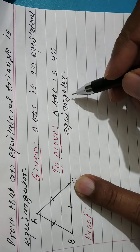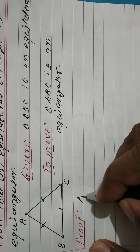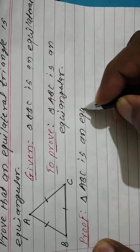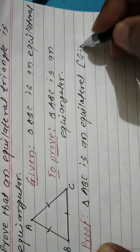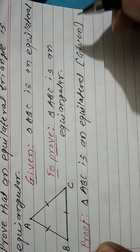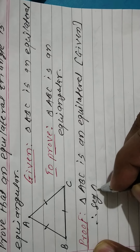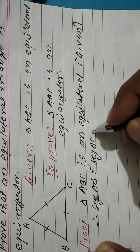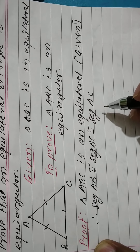Equiangular means all the angles are equal. Now, proof: if triangle ABC is equilateral, this is given. Therefore, segment AB is congruent to segment BC, which is congruent to segment AC — all sides are equal.